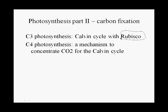Then we will touch on C4 photosynthesis, which is a mechanism to concentrate carbon dioxide for the Calvin cycle and get around some problems that are inherent with Rubisco.